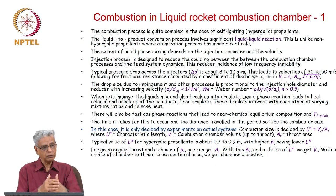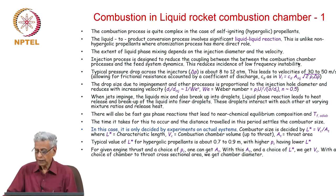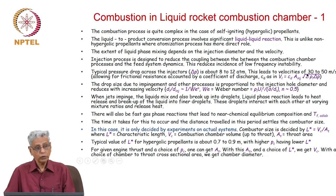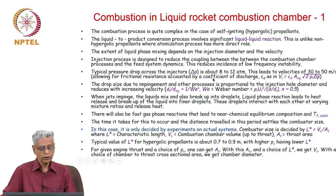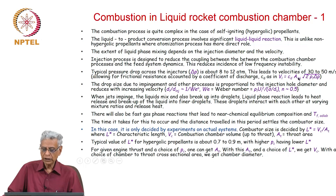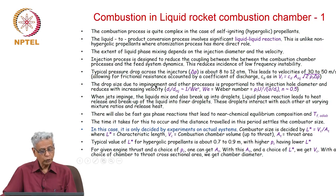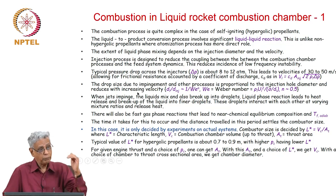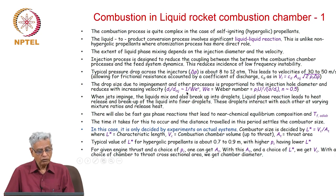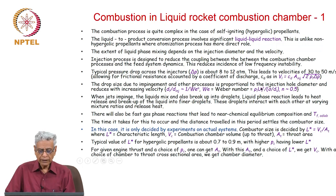To avoid the coupling between the feed system and the combustion chamber, one must keep the pressure drops reasonably high — I have indicated 10 to 12 atmospheres. This leads to injection velocities of 30 to 50 meters per second. You allow for frictional resistance by invoking a coefficient of discharge: V_L = C_D · A_injector · √(2ρ_L · ΔP). The drop size due to impingement is proportional to injector hole diameter and reduces with increasing velocity, since droplet diameter to injector diameter goes like Weber number to the power of N, where N is typically 0.5.